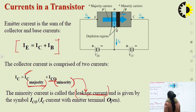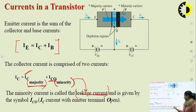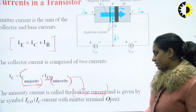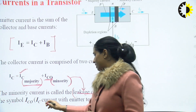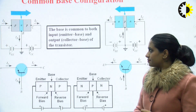Current due to minority charge carriers is not typically considered. This minority current is called leakage current and is given the symbol ICO — collector current with the emitter terminal open.